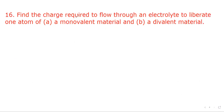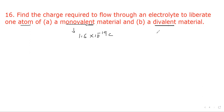Question 15: Find the charge required to go through an electrolyte to liberate one atom of a monovalent and a divalent element. For a monovalent element, the charge must be one electronic charge, which is 1.6 into 10 to the power minus 19 coulombs per atom.